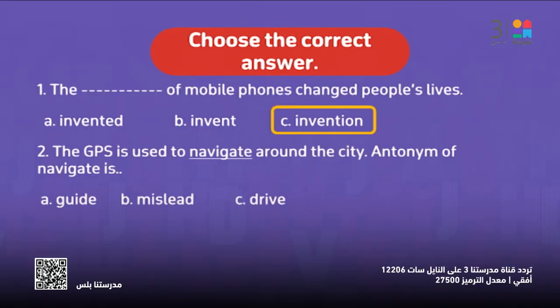The GPS is used to navigate around the city. The antonym of navigate — the opposite of navigate — is: guide, mislead, or drive? It has to be, of course, mislead.